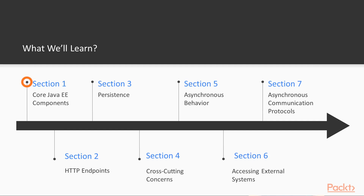Now for the course overview, what we're going to cover. First, in section one we're going to see the so-called core Java EE components — that includes EJB and CDI mostly. Then in section two, we will see how to connect Java EE applications using HTTP endpoints.